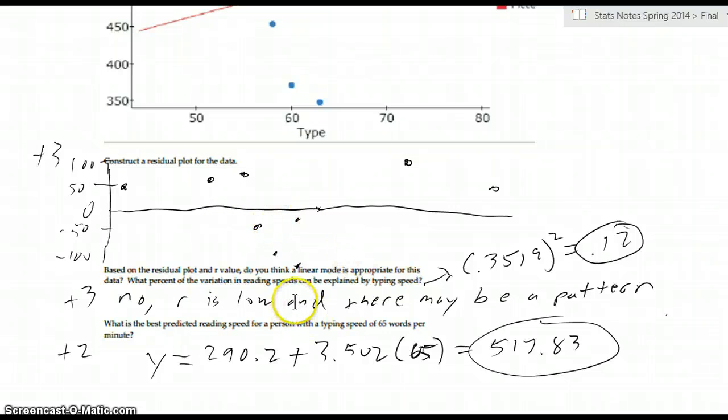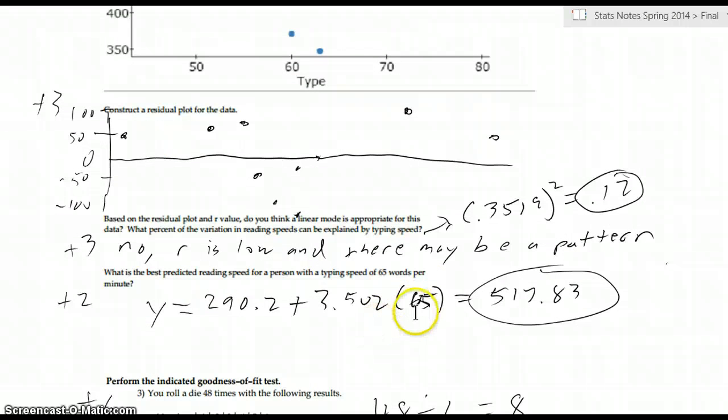And then it says, what percent of the variation can be explained by... This is reading based on typing speed. And that's only about... If you take R and square it, R squared is 0.12. So only about 12% of the variation is explained here. But if we did use this model, what would it predict? If we put 65 in for their typing speed, that would give them a reading speed of 517 words per minute.